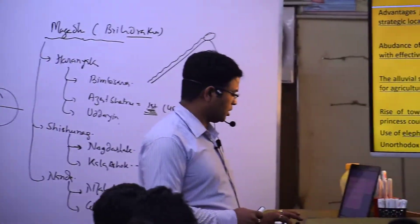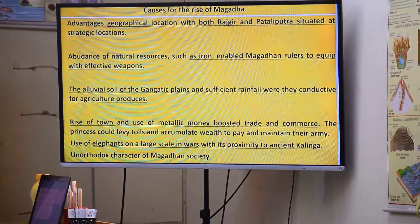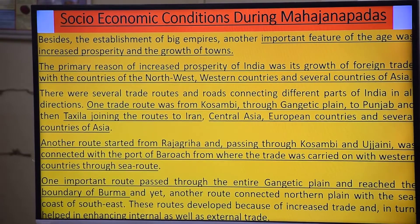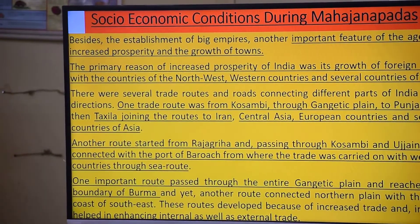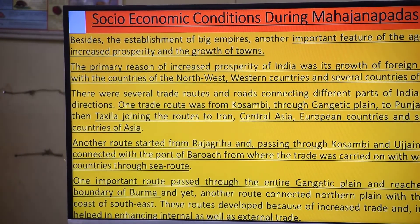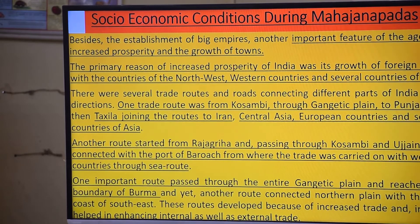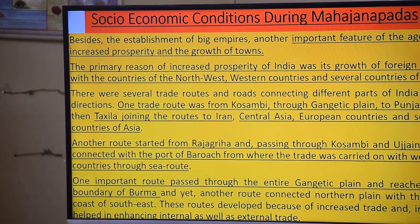Now let us look at the socio-economic conditions during the Mahajanapada period. Besides the establishment of big states, another important feature of the age was increased prosperity and growth of towns. As discussed earlier, the first urbanization was during the IVC and the second urbanization started with the 16 Mahajanapadas.